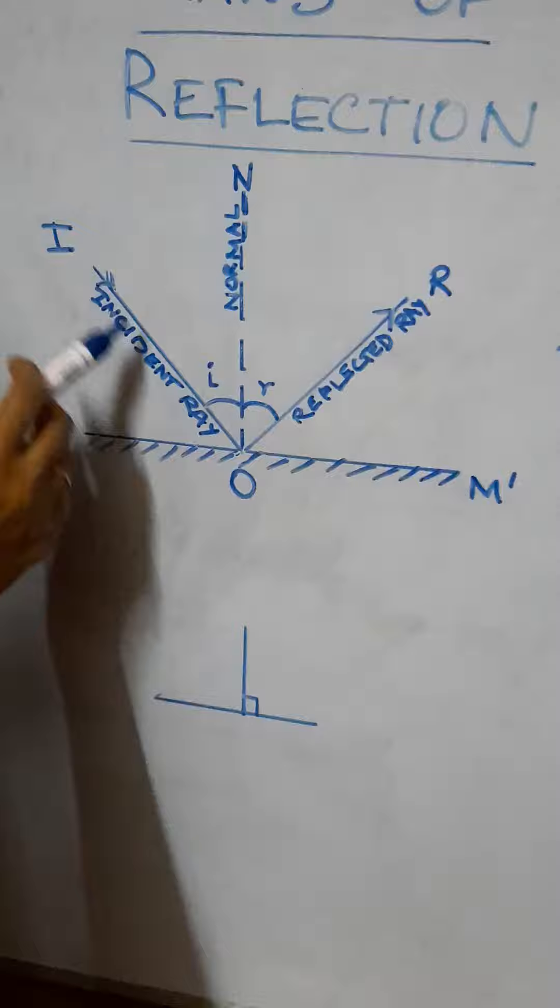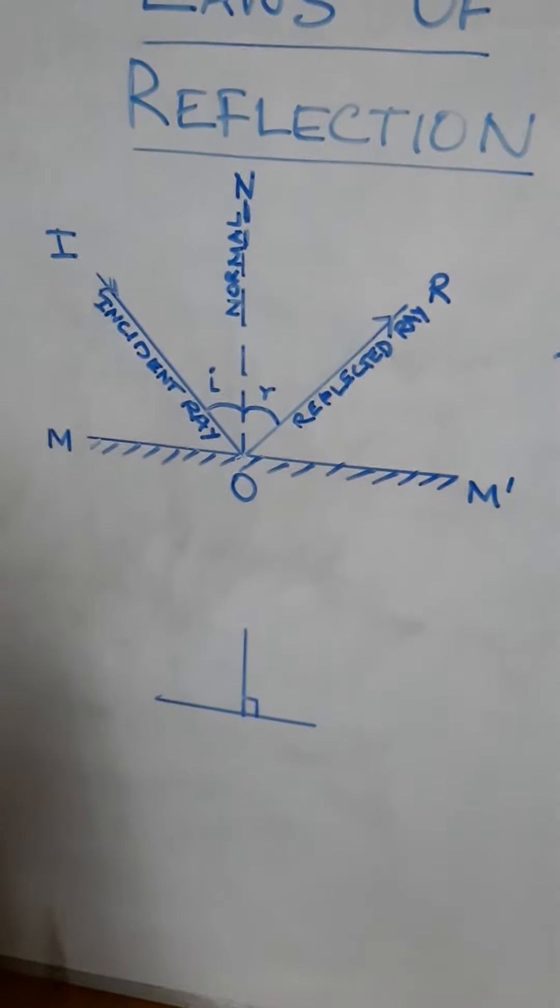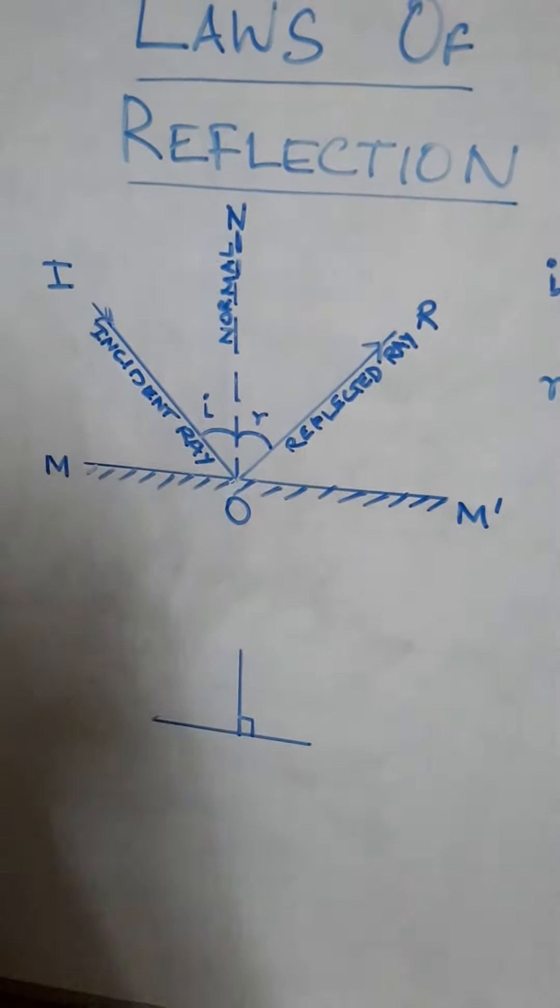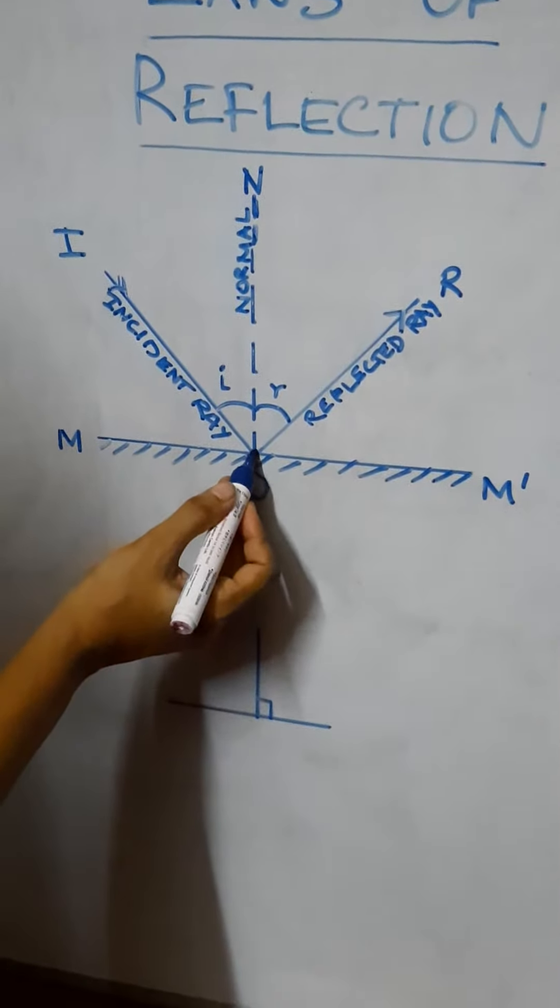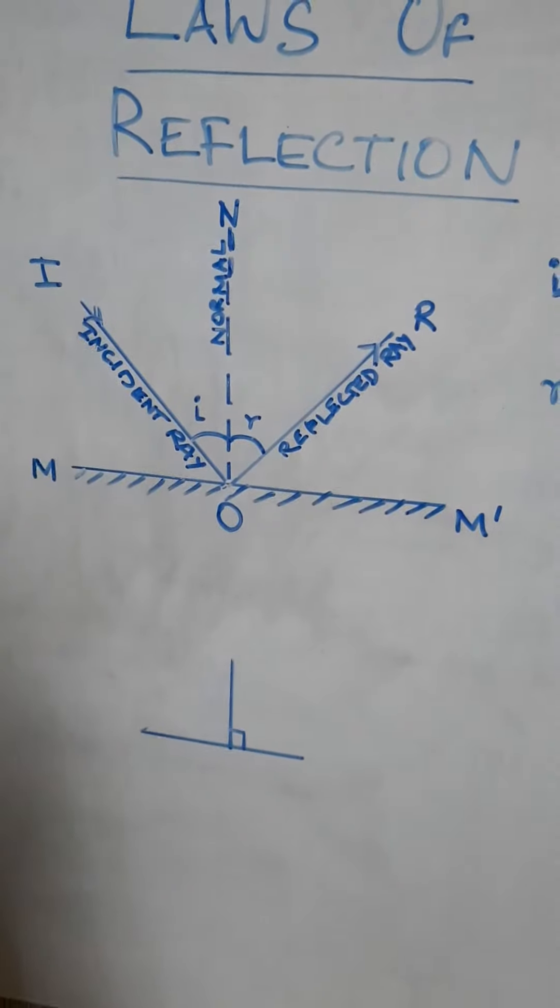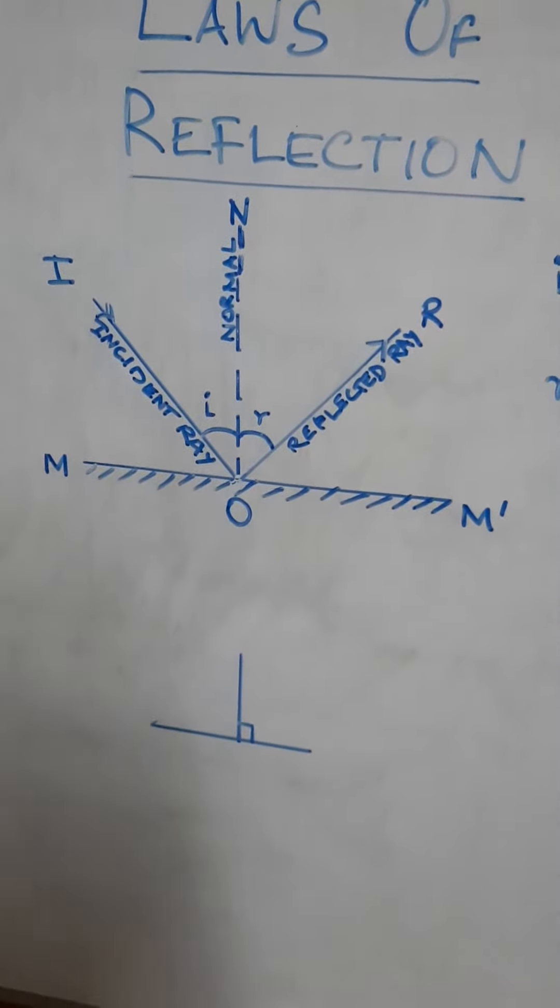So the incident ray and the corresponding reflected ray, the normal at the point of incidence - O is the point of incidence - lies on the same plane. This is the first law.